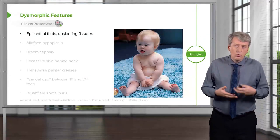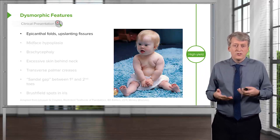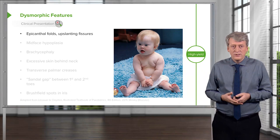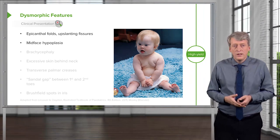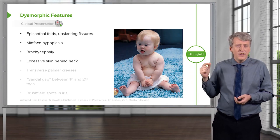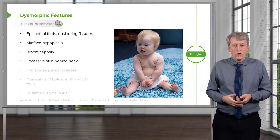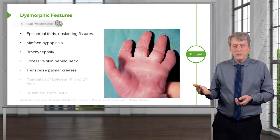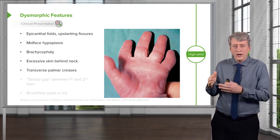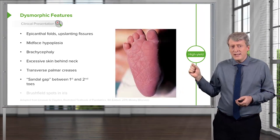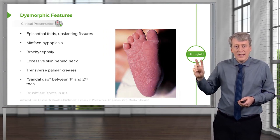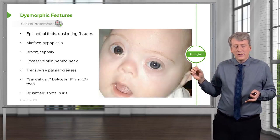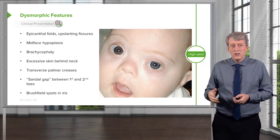If we have a baby and we're wondering whether they might have Down syndrome, this is a diagnosis frequently made on physical exam. Classic findings include epicanthal folds or upslanting palpebral fissures, mid-face hypoplasia, brachycephaly, and excessive skin behind the neck — which can sometimes be seen in utero on ultrasound. You may also see a palmar crease that goes straight across the hand, and a gap between the first and second toes, similar to where a flip-flop post would go.